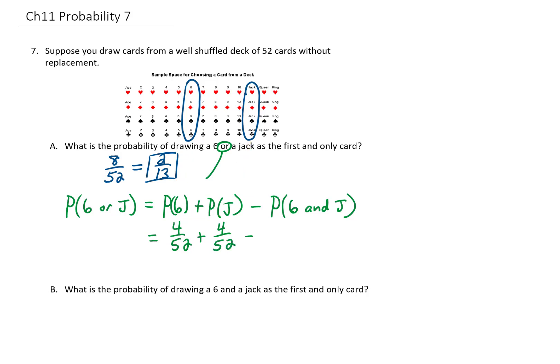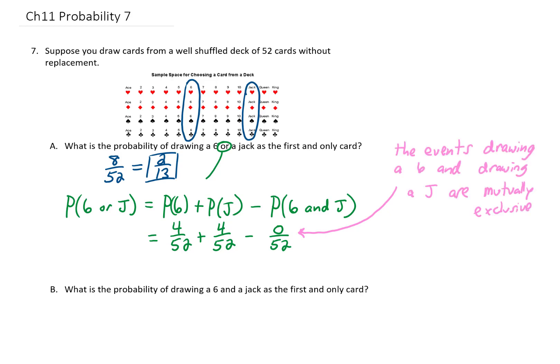The question is how many ways can we draw both a 6 and a jack? Well, there aren't any cards that are both a 6 and a jack in the deck. Those two things can't happen at the same time, so this probability that we're subtracting off is 0 out of 52. A little vocabulary to describe this situation: drawing a 6 from the deck and drawing a jack from the deck are mutually exclusive events — both can't happen at the same time. So our probability turns out to be 8 over 52 again.